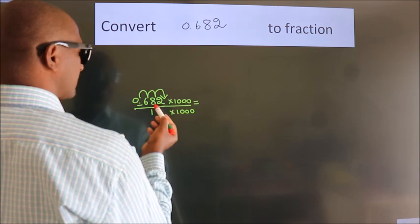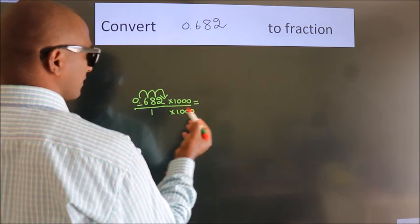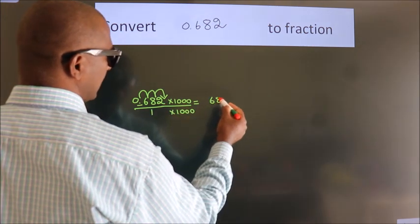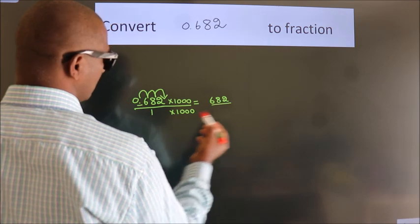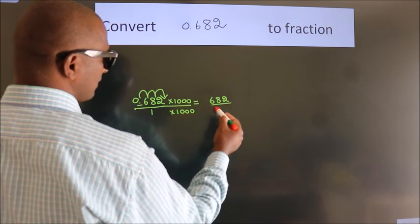0.682 into 1000, 682. 1 into 1000, 1000.